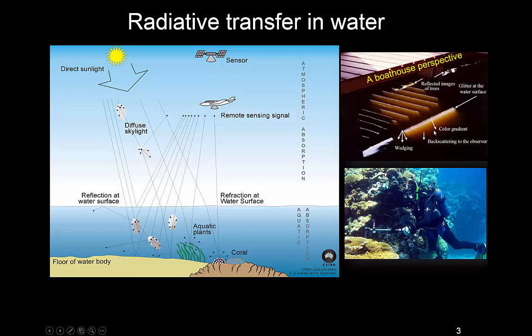Light doesn't simply travel through water — it reflects at the surface, seen as glint here for instance. It reflects on particles in the water, as seen here. The backscattering you see there is because of turbidity in the water, and then of course it also refracts at the water surface. So the incident angle doesn't remain the same — it changes the moment it hits the water. So this is a more complicated problem to solve inversely when you do inverse radiative transfer modeling than for land surface remote sensing.